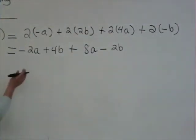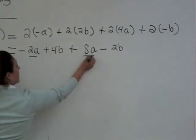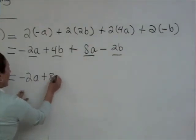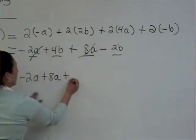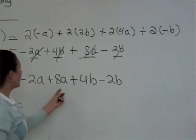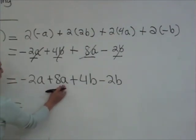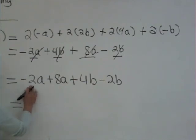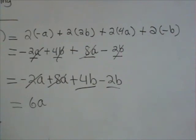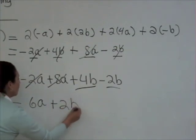Can we combine terms right now? We can, because we have A and A, and we have B and B. So we put all like terms together: negative 2A plus 8A, plus 4B minus 2B. Negative 2A plus 8A — if you take 2 away from 8 — you're going to get 6A. And if you have 4B minus 2B, you take away 2B out of 4, so you're going to end up with 2B. This is your final answer.